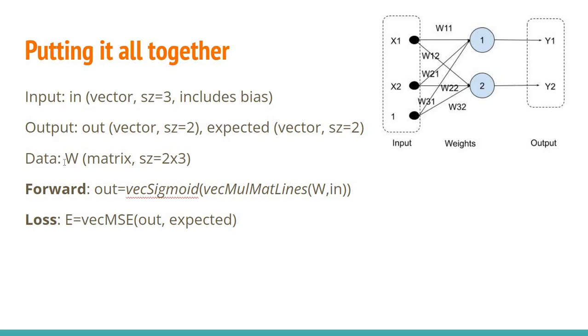And we have W, which is the weights matrix, which would be of size two times three. And we have the forward computation, which we can use existing functions. The calculation of sigmoid over vector and the multiplication of matrix lines with vector.